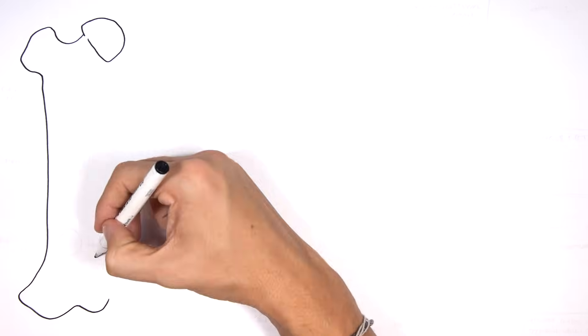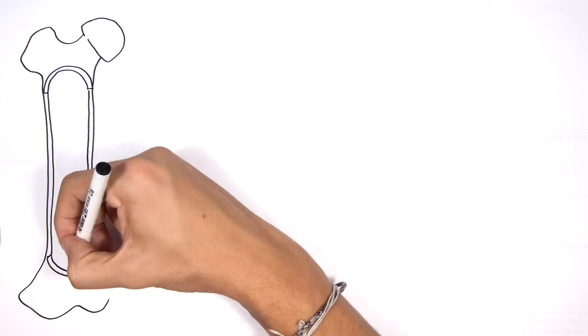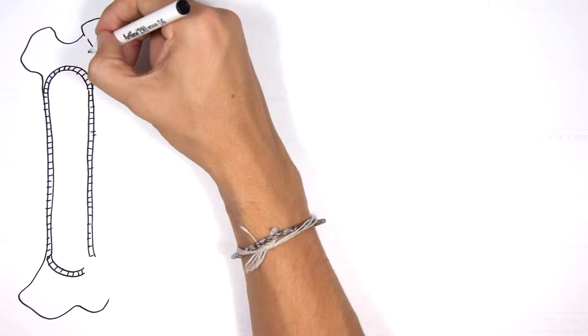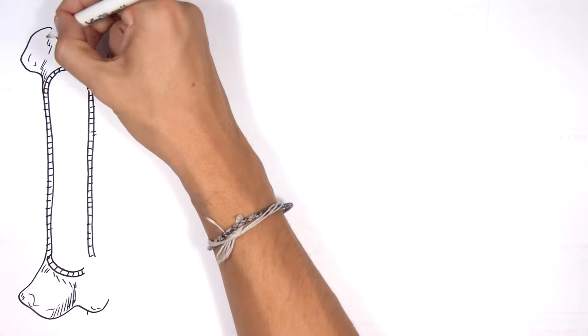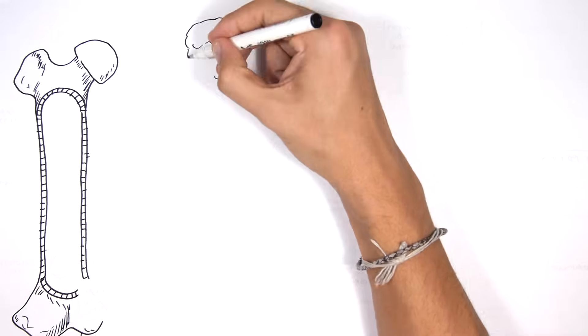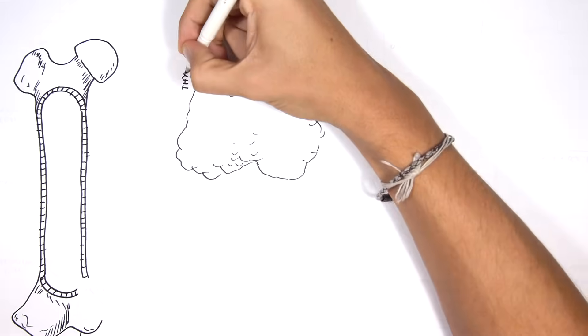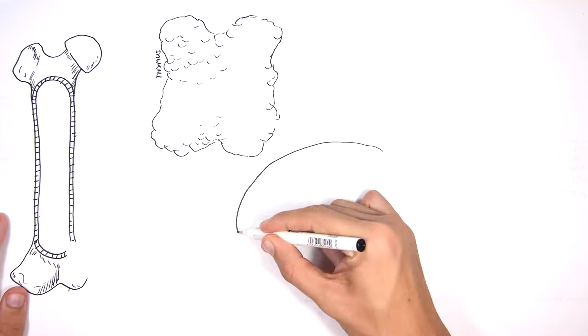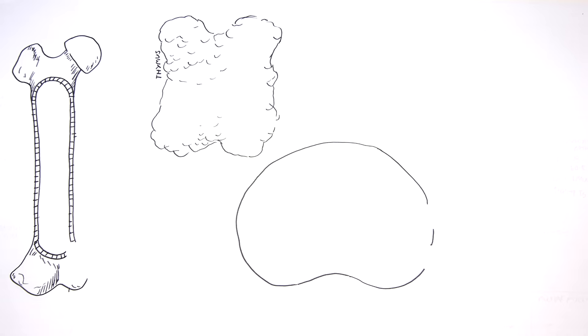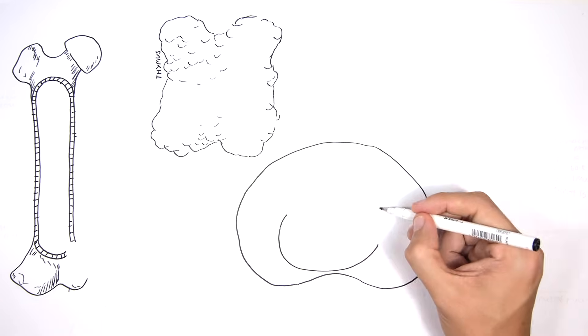Hello, in this video we're going to look at the B cell and the T cell story, as well as introduce lymphoma, particularly B cell lymphoma. I'm introducing the organs associated with B and T cells: the bone marrow, the thymus, and the lymph node.